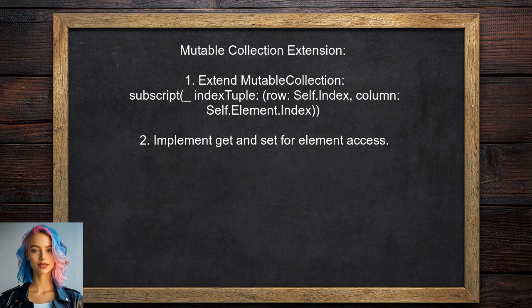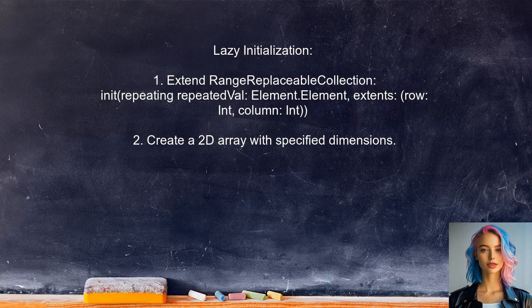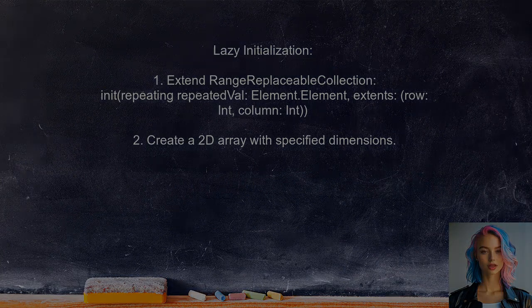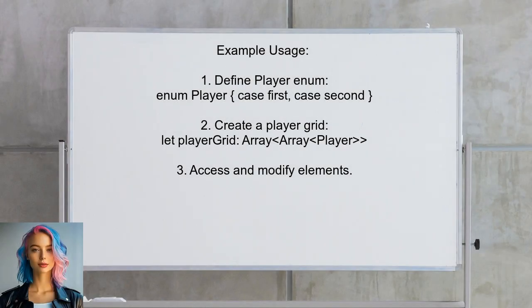The user also proposes creating a mutable version of the subscript for collections that can be modified, allowing for both getting and setting values at specified indices. Additionally, they recommend a lazy initialization method for creating a 2D array using a custom initializer that fills the array with repeated values based on specified dimensions. For example, they demonstrate creating a player grid, initializing it with a default value, and modifying a specific position.